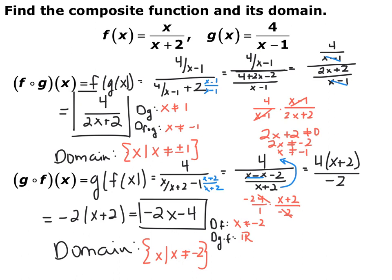When doing a composite, you replace every x in the outside function with the entire inside function and simplify as far as possible. For the domain, find the domain of the inside function, domain of the final function, and take the most restrictive possibility. Thank you very much.